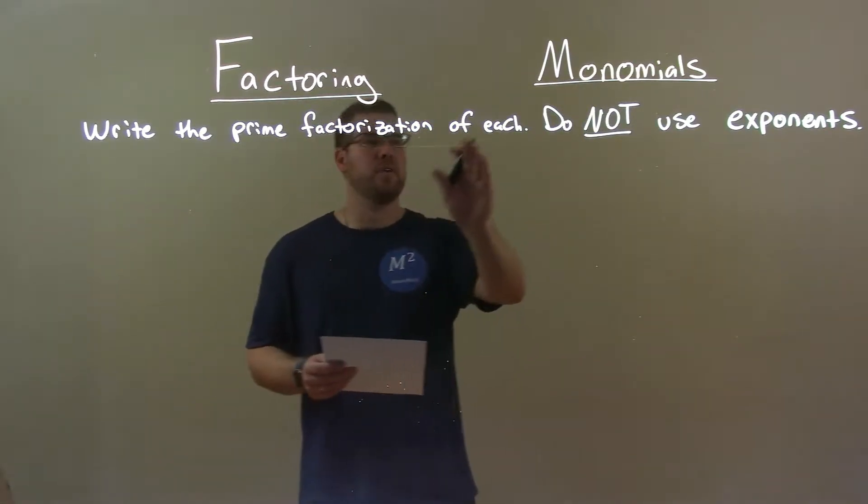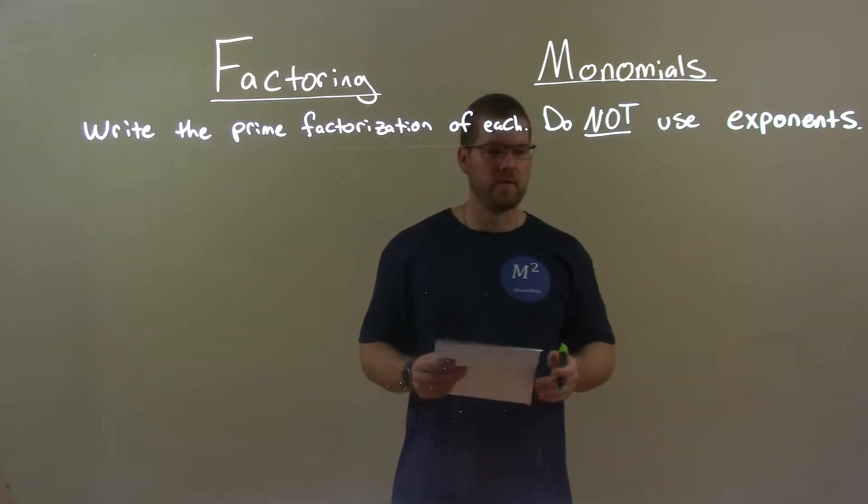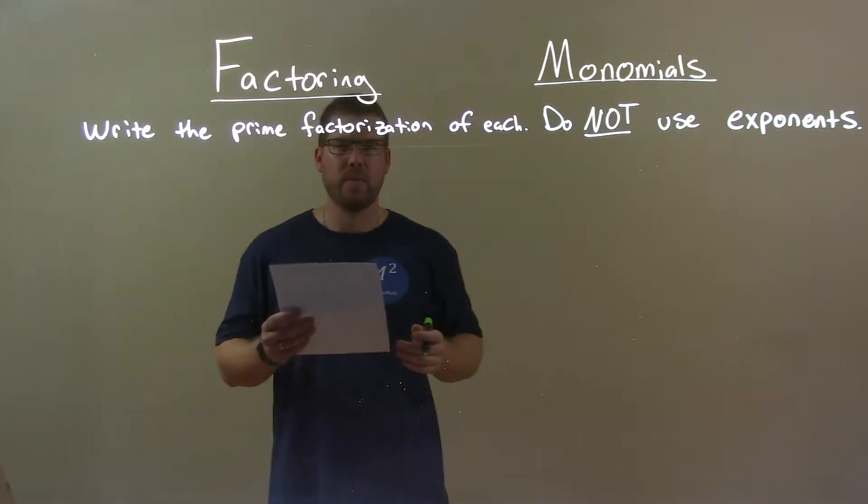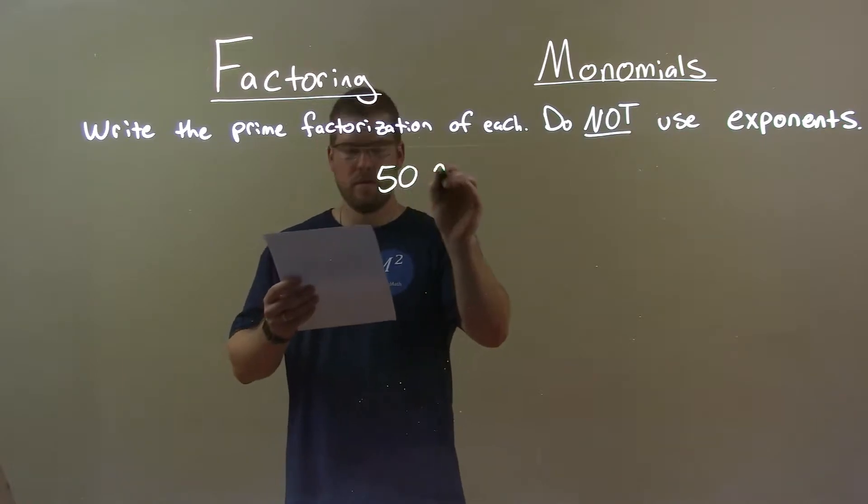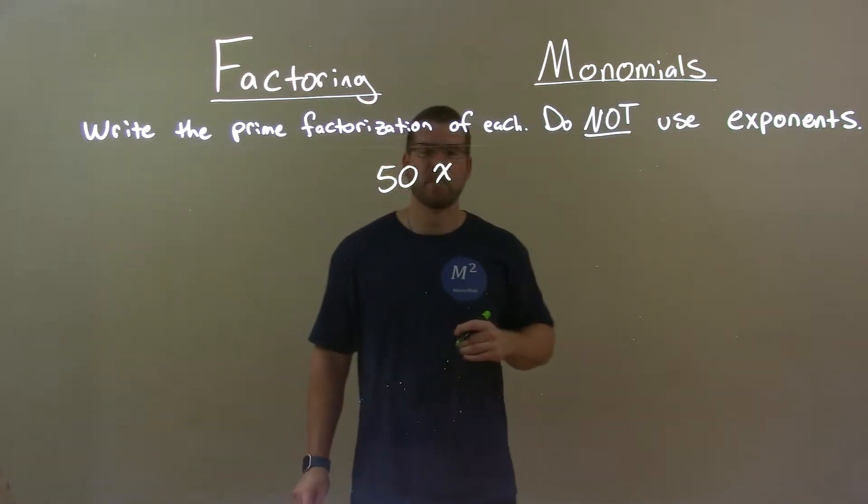We're going to write the prime factorization of each, and do not use exponents. So, if I was given this number, 50 times x, alright?